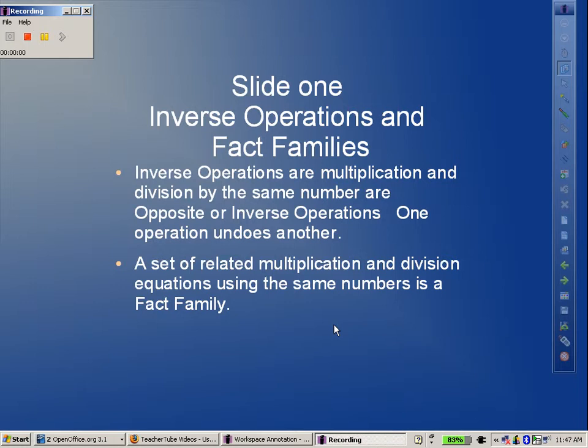First of all, inverse operations are when you have multiplication and division fact families. If we have, for example, 3 times 5 is 15, the inverse of that, the opposite, would be 15 divided by 5 equals 3. One operation can undo another, just like we talked about with fact families. Any set of related multiplication and division equations which use the same numbers are indeed fact families.